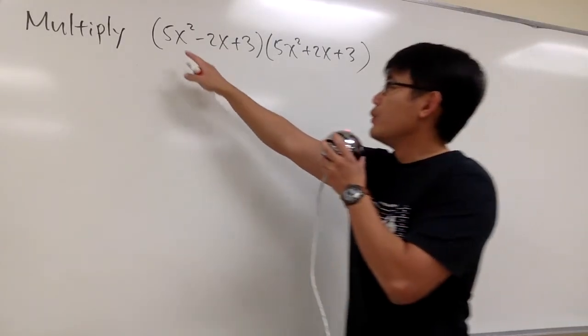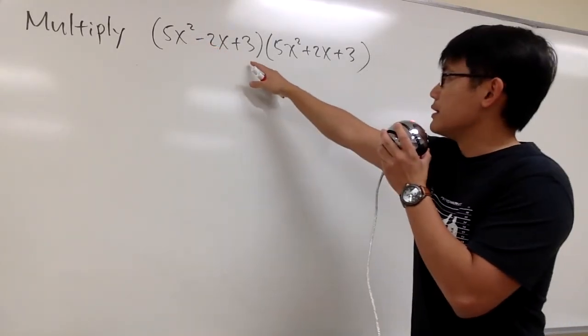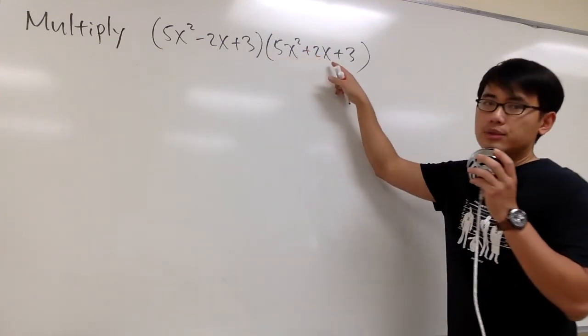We are going to see how to multiply this out. We have (5x² - 2x + 3) times (5x² + 2x + 3).